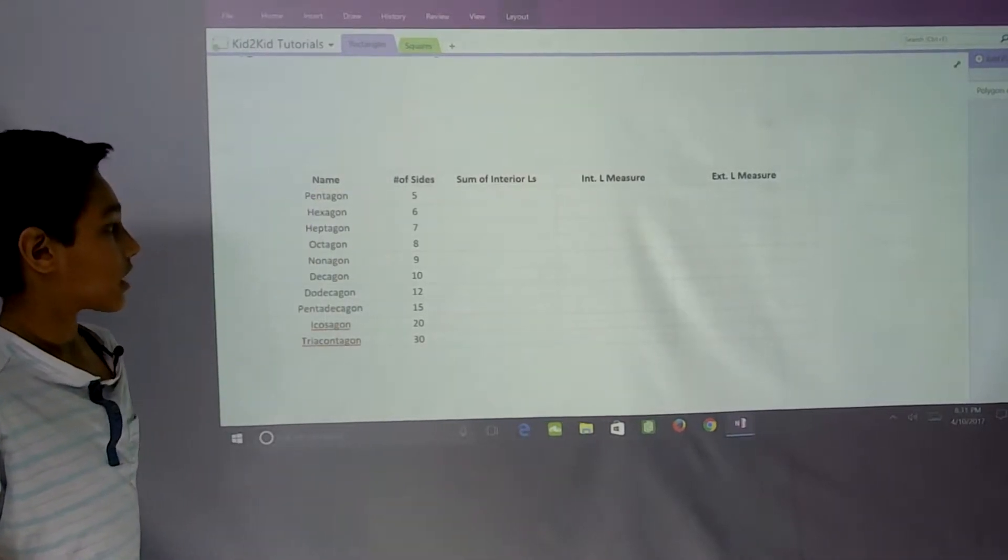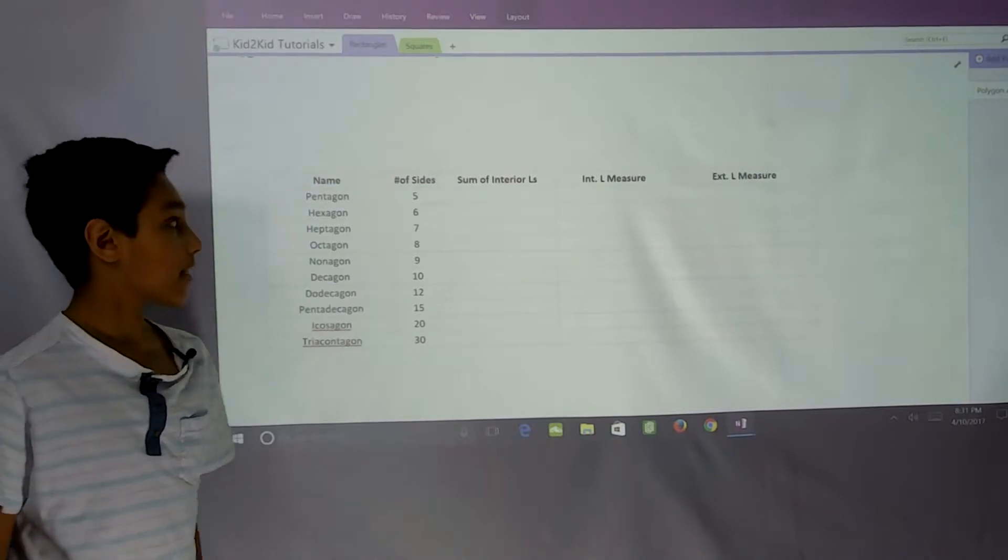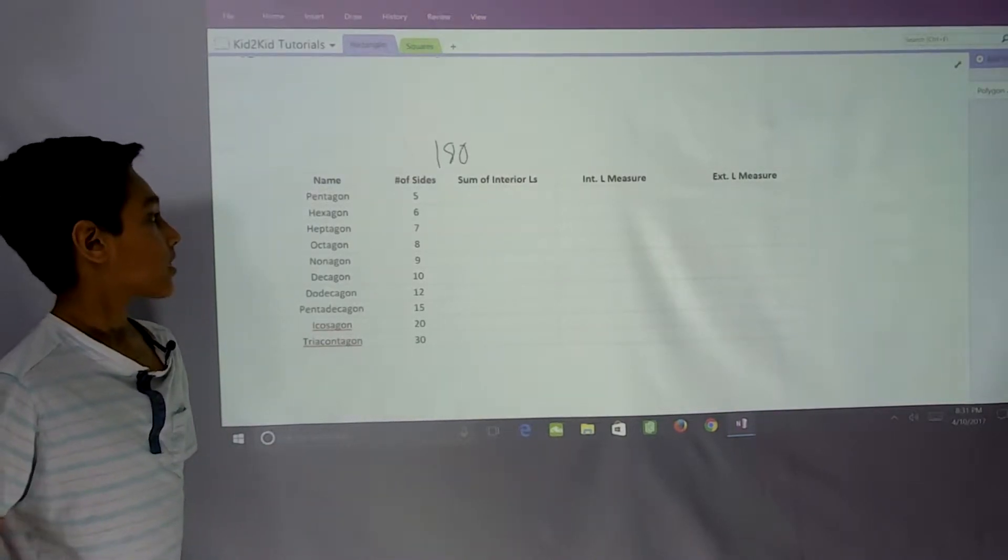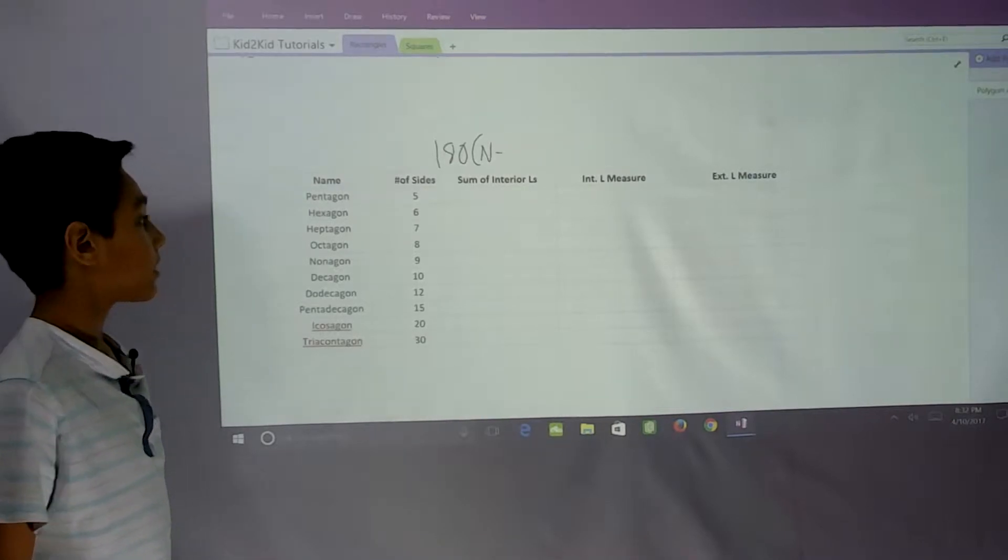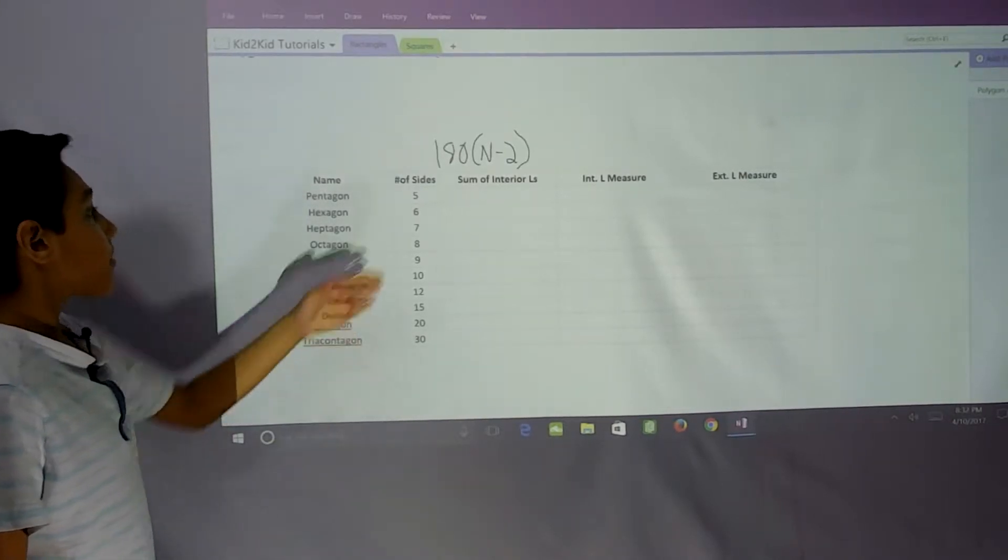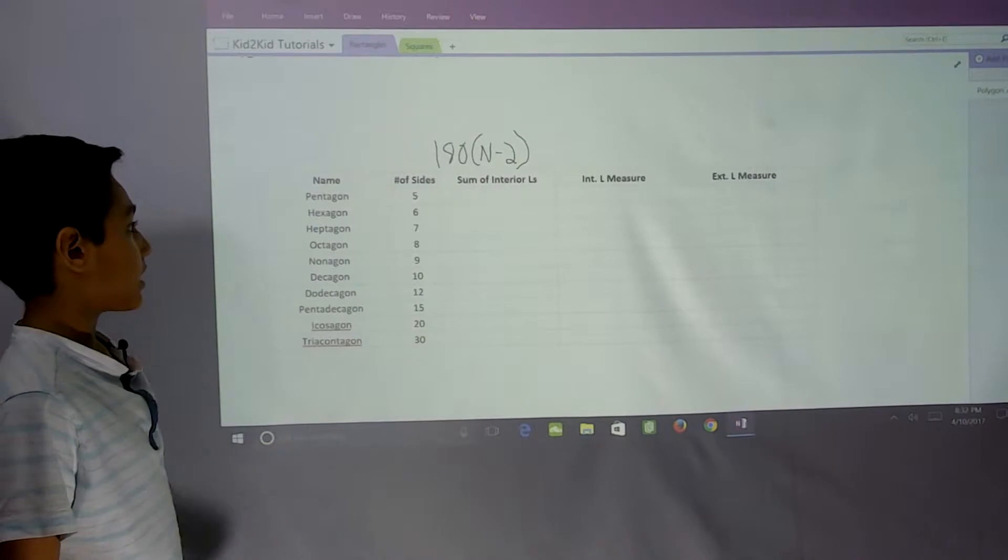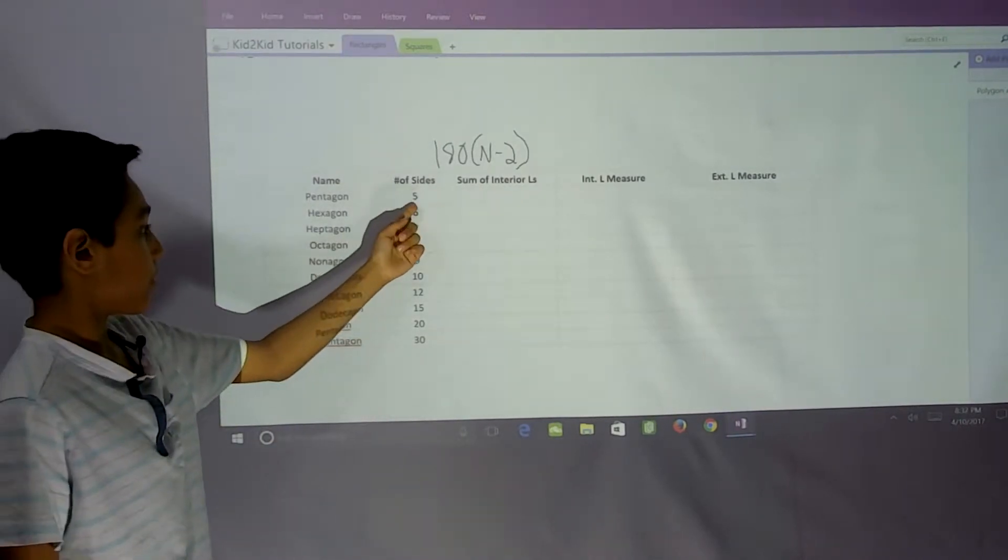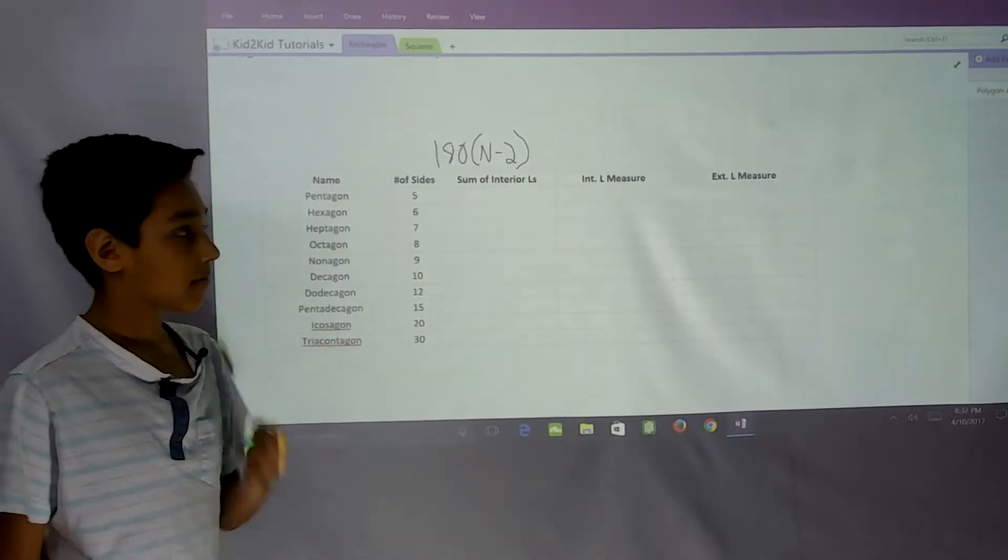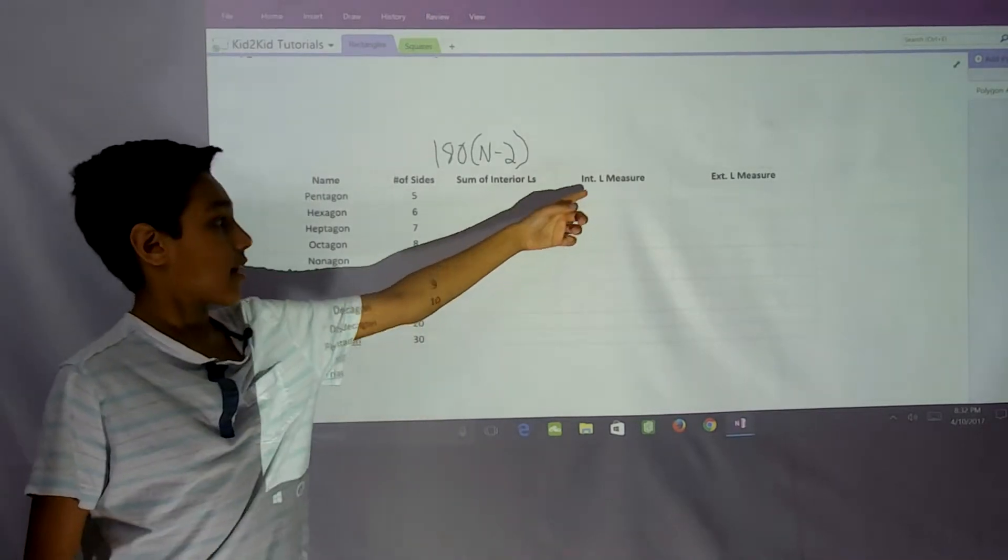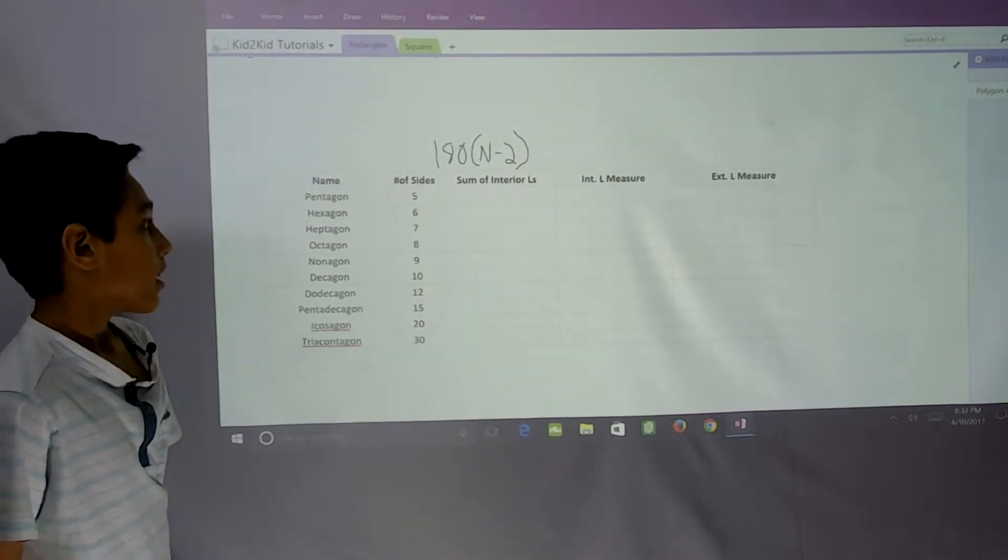The sum of the interior angles is 180 times n minus 2, where we're using n as the number of sides. So for a pentagon, n would be 5, the number of sides.